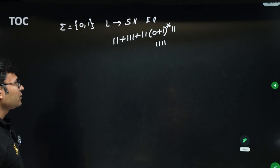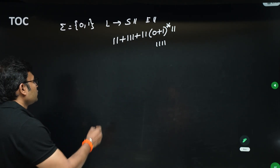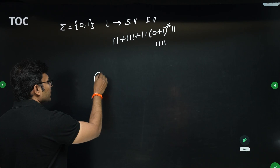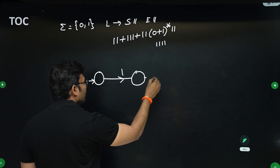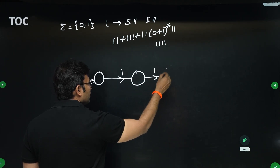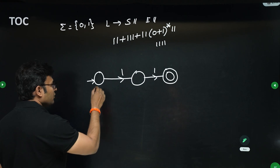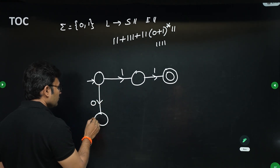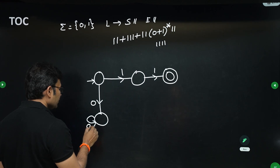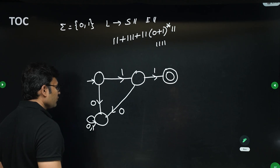Directly drawing an NFA will be difficult for this question, so let's do the DFA first and then convert it into an NFA. '11' has to be accepted. If the string is starting with '0' we will kill it, because it is not starting with '11'. If the string is starting with '10' we will kill it, because it is not starting with '11'.